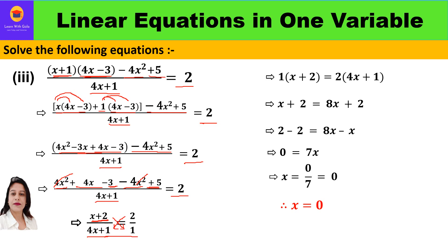Now it is an equation we solve by cross multiplication: 1 times (x plus 2) equals 2 times (4x plus 1). Anything multiplied by 1 is the number itself, so x plus 2. Then 2 times 4x and 2 times 1 gives 8x plus 2. Taking like terms together: 2 minus 2 equals 8x minus x.